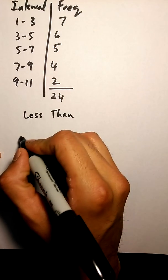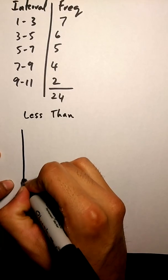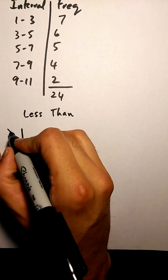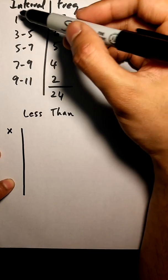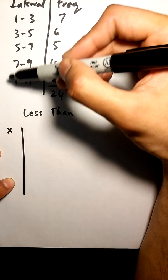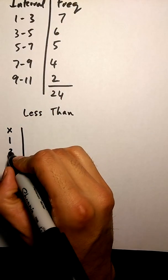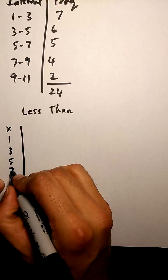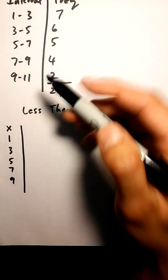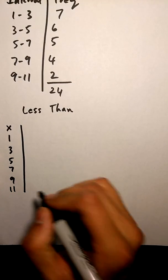For less than, the first thing I'm going to do is create my table. For the x values of my table, I'm always going to pick the first number of each interval in my interval column. So 1, 3, 5, 7, 9. But I'm always going to end with my highest number in the interval, so I will end with 11.